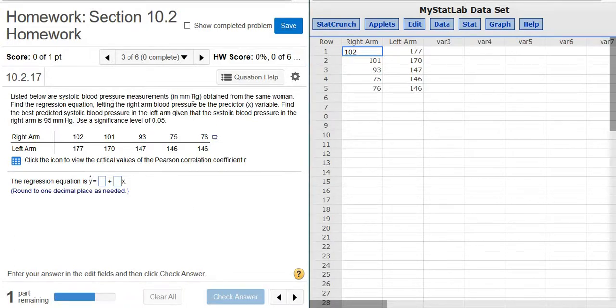Listed below are systolic blood pressure measurements obtained from the same woman. We want to find the regression line. What we'll do is click this little box and click Open in StatCrunch. When you do that, you get what I have over here on the right, all of the data into StatCrunch.